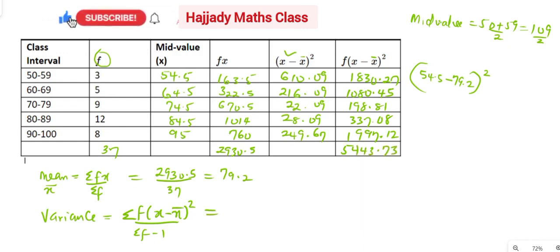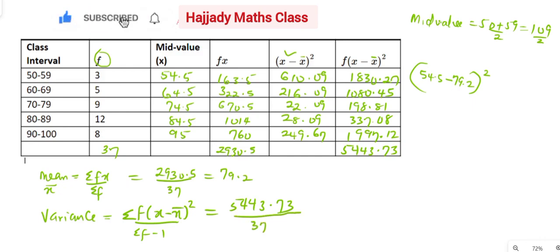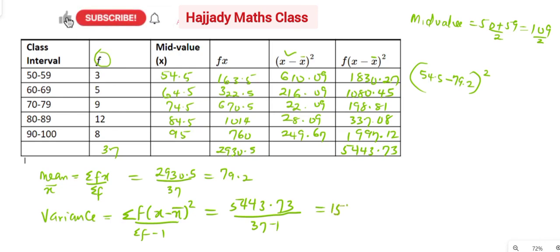So calculating the variance: summation f·(x − x̄)² equals 5443.73, all over summation f minus 1, which is 37 minus 1 = 36. Dividing this gives a variance of 151.2.